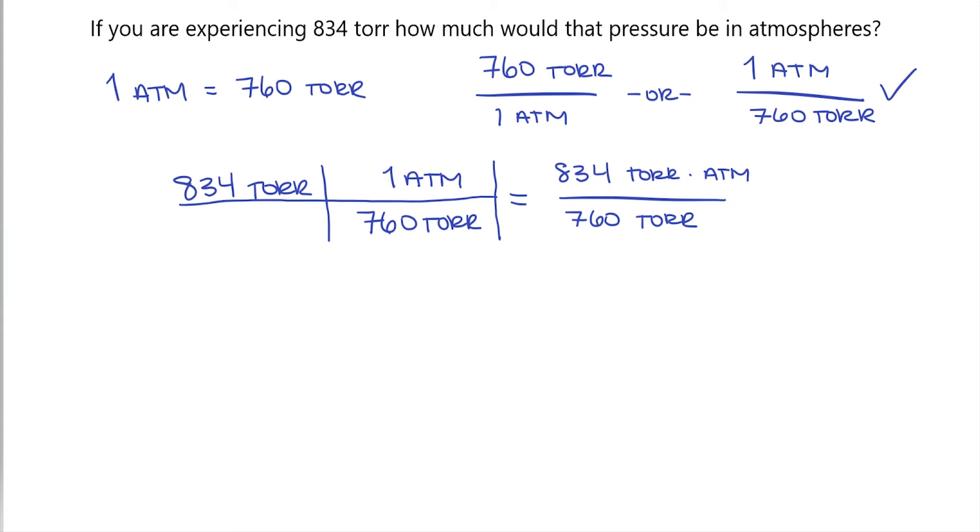Now since I have torr in the top and torr in the bottom, these units will cancel out, leaving me only with atmospheres, which is what the question wanted me to find. So if I take 834 and divide that by 760, this is going to be equal to 1.10 atmospheres.